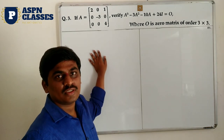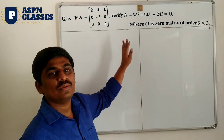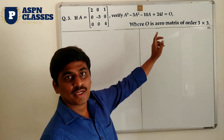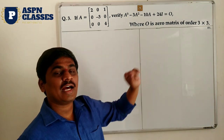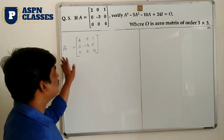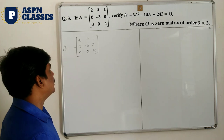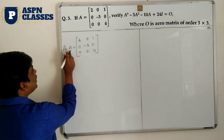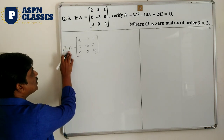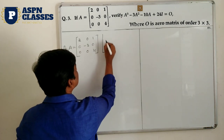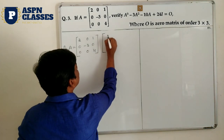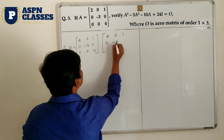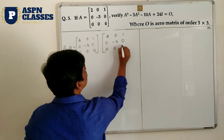If matrix A is given, you have to find A cube, A square, A, and the identity matrix I. This is your A matrix: [2, 0, 1; 0, -3, 0; 0, 0, 4]. Now you have to find A square first, which means multiplying A into A.